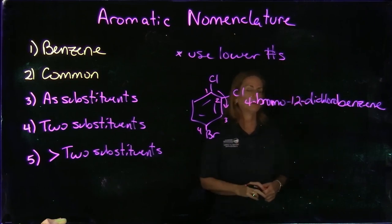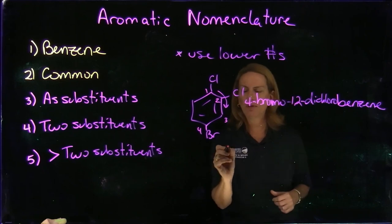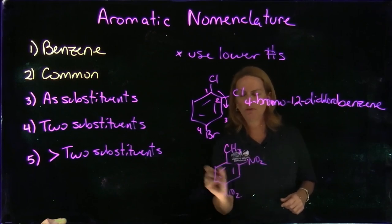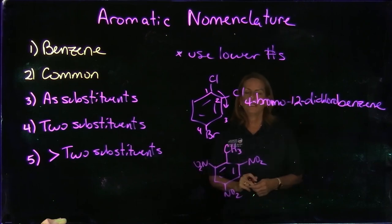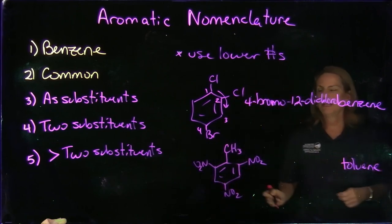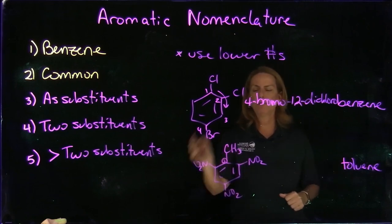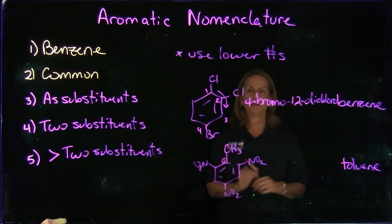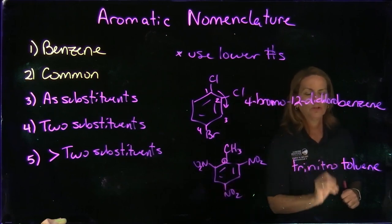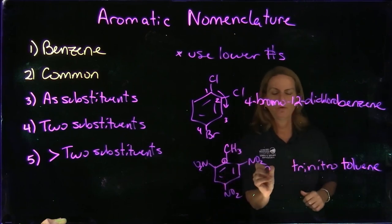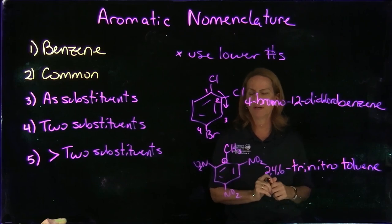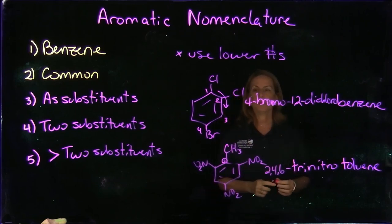Here's another example you may have heard of: benzene with a methyl group and nitro groups. The methyl makes it toluene, and the substituent giving the common name automatically gets number one. We have three nitro groups — trinitro — and the lowest numbering puts them at positions 2, 4, and 6. So this is 2,4,6-trinitrotoluene — all one word. You may have heard of it: that's TNT.